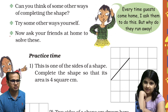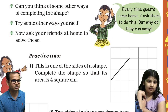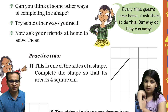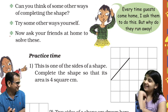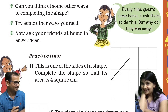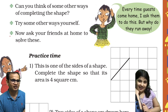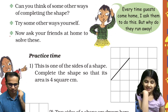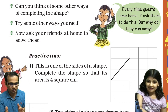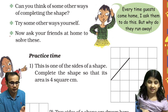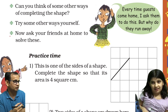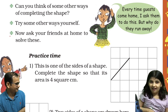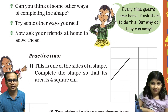This girl is saying something. She says: 'Every time guests come home, I ask them to do this — but why do they run away?' Anusha, next time when guests come, you ask them these questions! I am drawing two sides and you draw some more area with two sides so that the area should be 10 square centimeters. You can have fun like this!